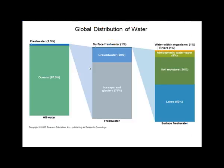Here is an image showing the global distribution of water on the planet. If you imagine a column representing all the water in the world, oceans make up almost 98 percent of that water, and fresh water is just a small line on top — about two and a half percent. Expanding that two and a half percent, almost 80 percent is in ice caps and glaciers, another 20 percent is found underground, and surface fresh water is only about one percent of that two and a half percent.